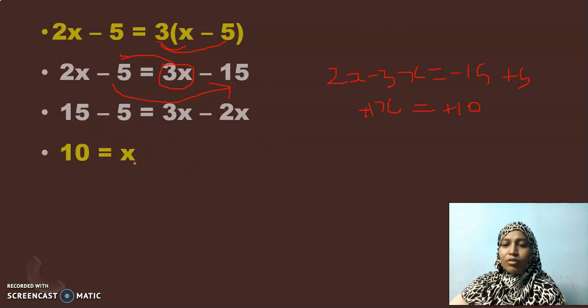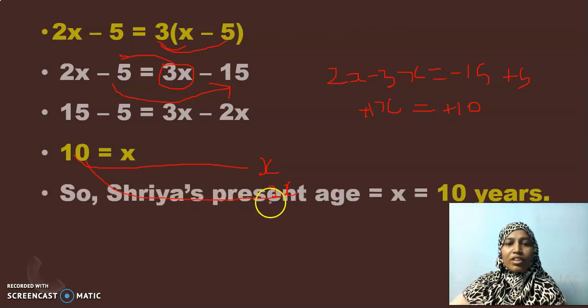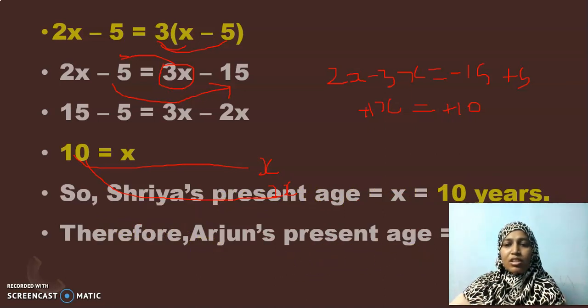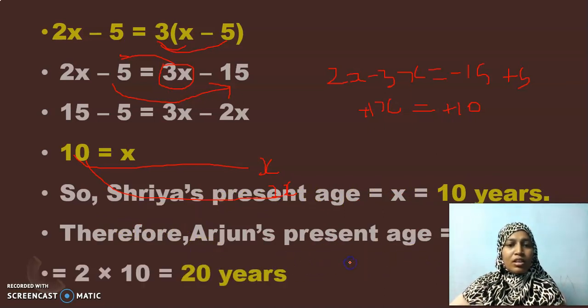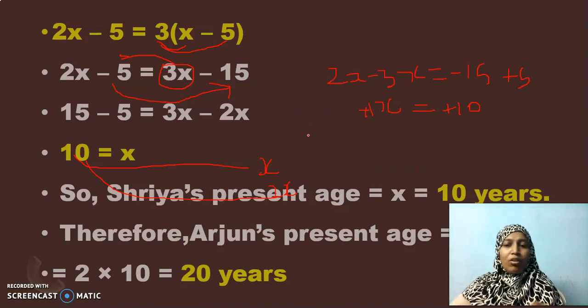What is our objective? I have to find their present ages. What are their present ages? Shriya's present age is X and Arjun's present age is twice X. I have to substitute the value of X both here and also here. So I get Shriya's age to be 10 years and Arjun's age is 2 into X which is 2 into 10, 20 years. Arjun's age is 20 and Shriya's age is 10 years. Is it clear my dear children? Whenever you have problems with ages that have present age, 5 years ago, 5 years after, going for tabulation to have a clear idea about what is the problem and what is our objective to be found. Now, shall we move to the next?